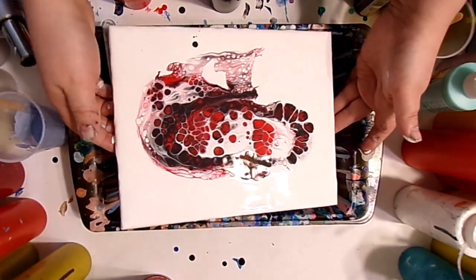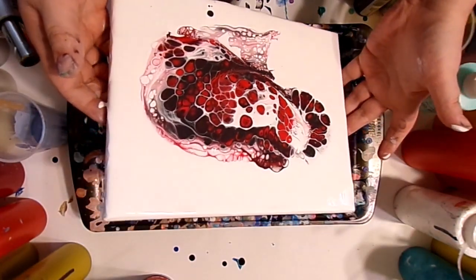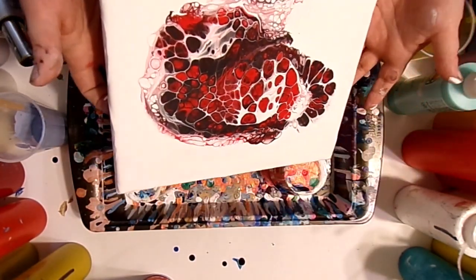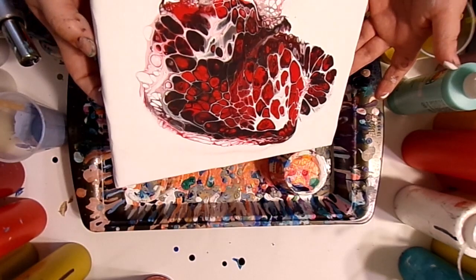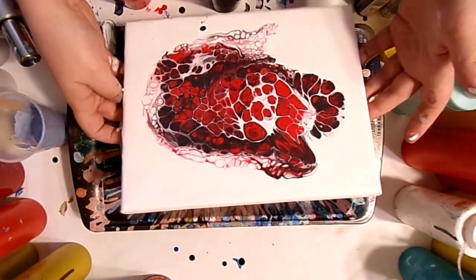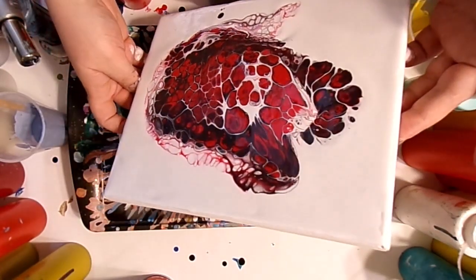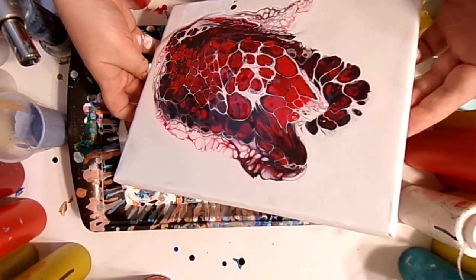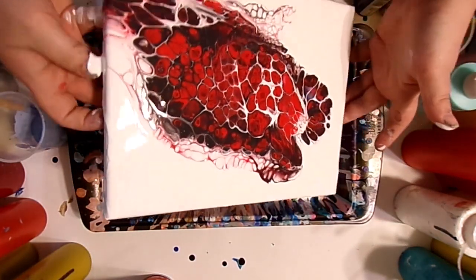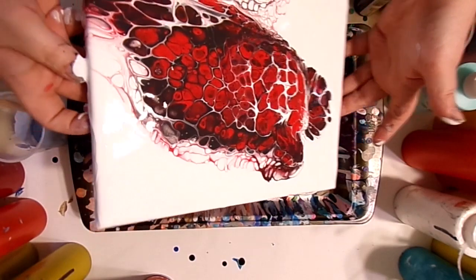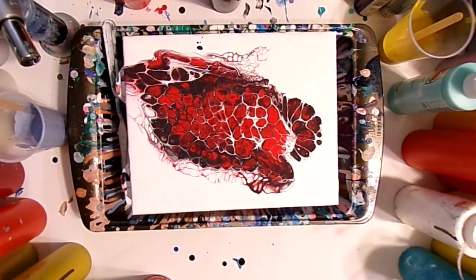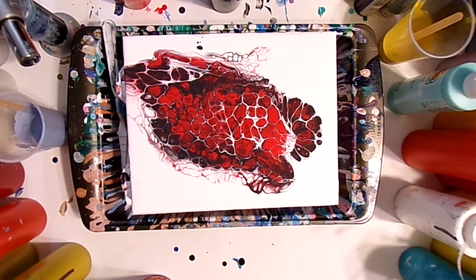Now you can pick it up and tilt it a little bit just to get the paint spread around. And that is a floating cup paint pour. I hope you can join us for episode nine. Thank you very much for watching.